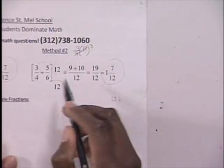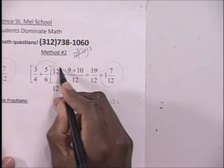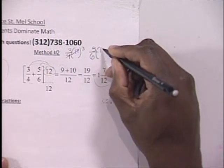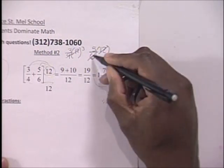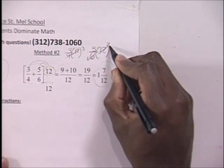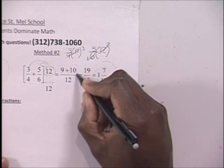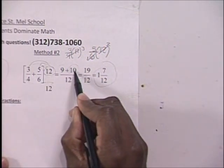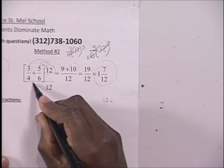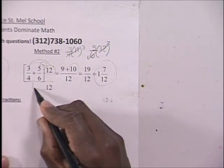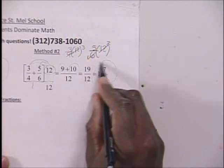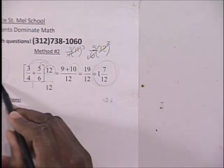Then we multiply 5 sixths times 12. The 6 cross-cancels with the 12 — that becomes a 2 — and you're left with 5 times 2, which is 10. You end up with 9 plus 10, which is 19. Multiplying the 1 by 12 gives 12, so you end up with 19 twelfths. That simplifies to the same 1 and 7 twelfths.